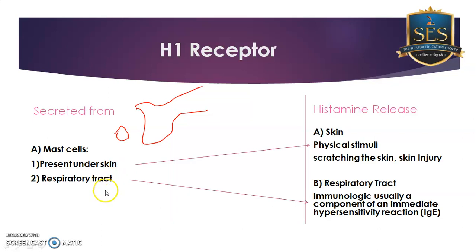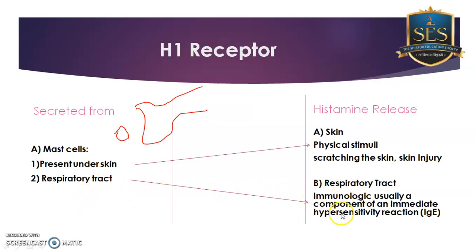So under what conditions does histamine release become allergic? You know the rule that whenever there is any kind of physical or skin damage, there is a release of histamine — that is a normal response. If some dust particle enters into the respiratory tract and causes an antigen-antibody reaction, histamine release causes sneezing and coughing — that is also a normal response.